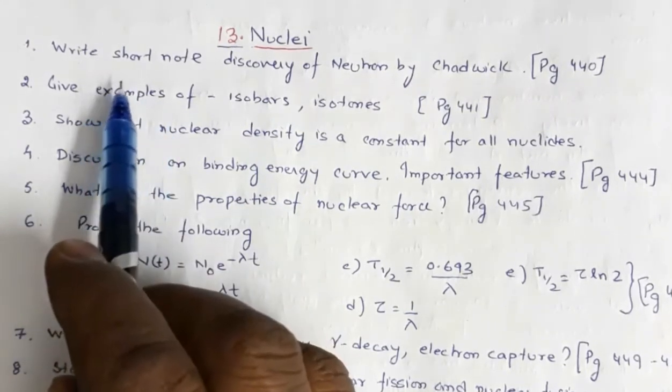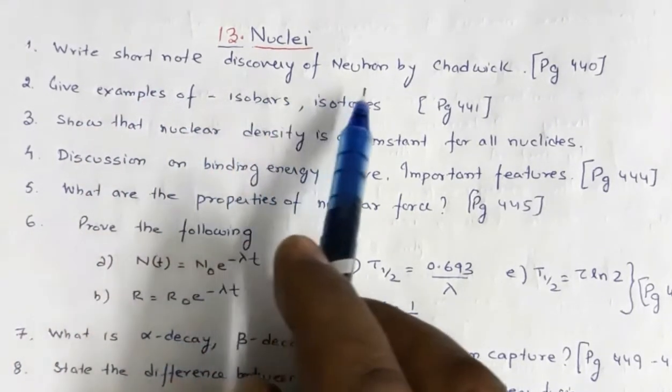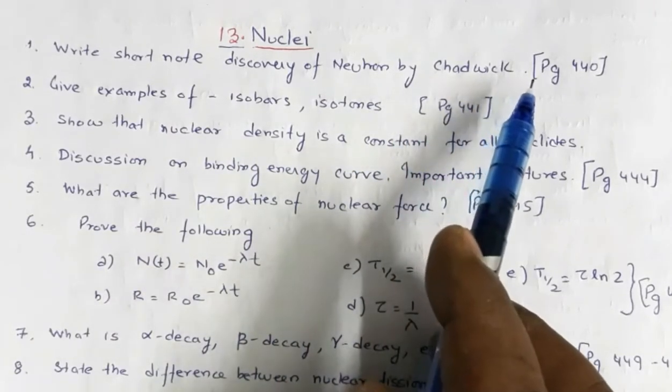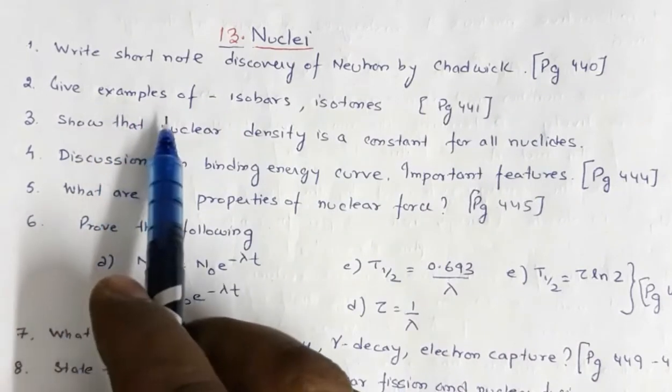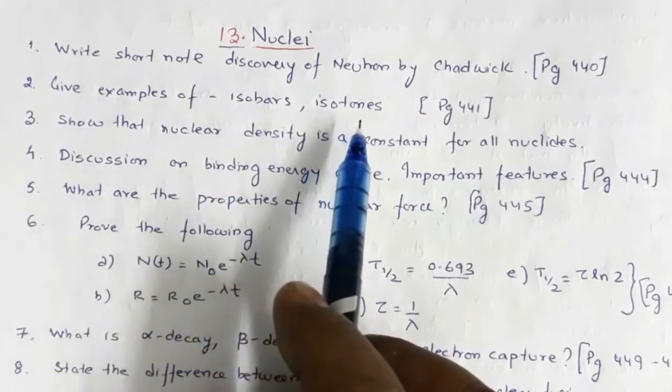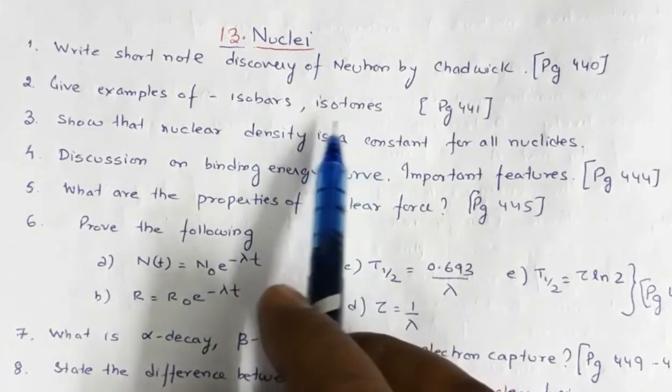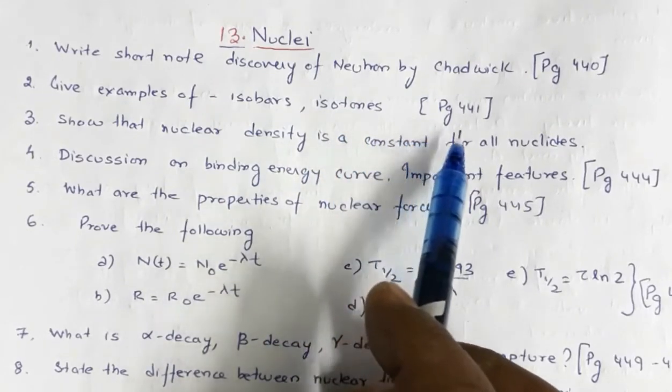So the first question is, write short note on discovery of neutron by Chadwick. Now answer to this question is given in page number 440. Then you have give examples of isobars and isotones. They may also ask you examples of isotopes. So this is given in page number 441.